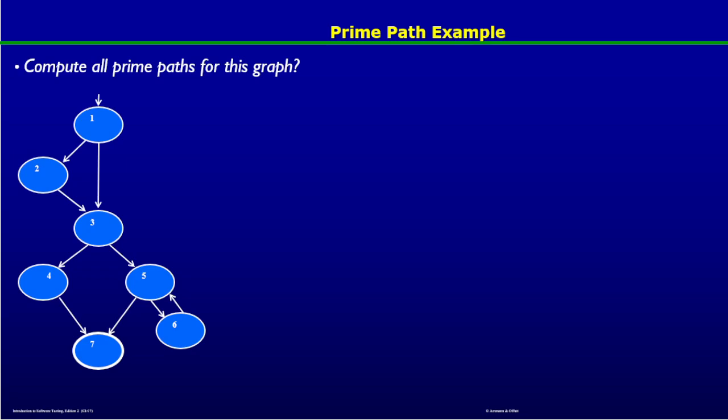In the last video we discussed simple paths and prime paths, and we defined these concepts in an effort to remove the issues which can be caused by loops in the control flow graph of a program. We found that a simple path does not have any repeating nodes except in the first and last position, and by that we were also able to represent a loop in the form of a simple path. In this video I'm going to work out an example to find all the prime paths on this given graph, which has seven nodes — node 1 is the initial node and node 7 is the final node.